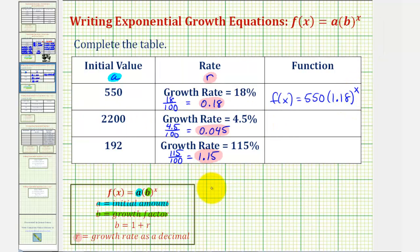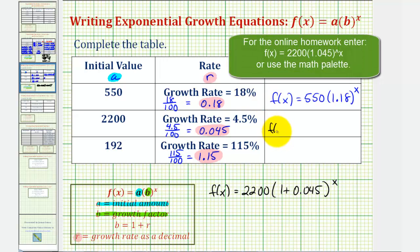For the next row, f of x is equal to the initial value of 2200 times 1 plus 0.045 raised to the power of x. And therefore, f of x equals 2200 times 1.045 raised to the power of x.